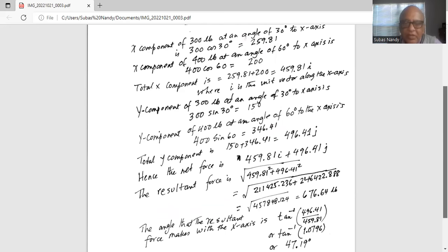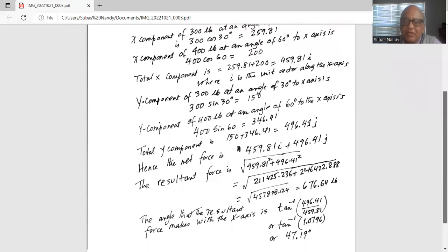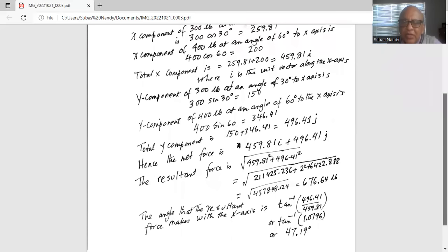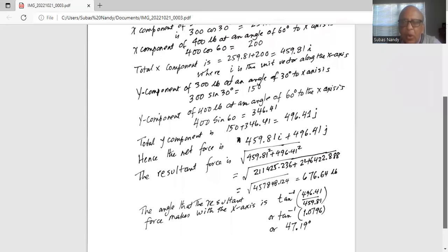The angle that the resultant force makes with the x-axis is tangent inverse of the y component divided by the x component, or 496.41 divided by 459.81, which is tangent inverse of 1.0796 (also called arc tangent 1.0796). Use the calculator in degree mode, then do second and tan (the tangent inverse), and you get an angle of 47.19 degrees.